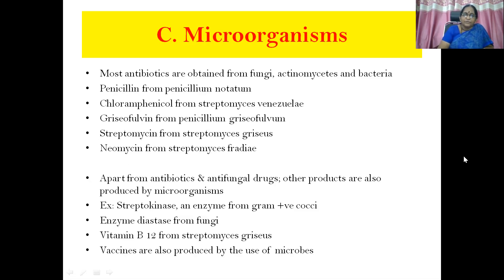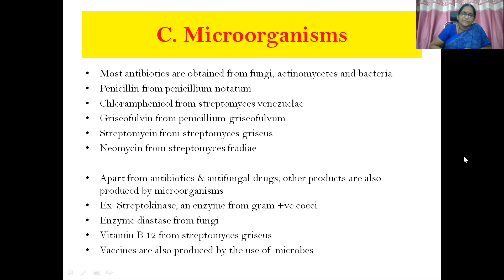Then another source is microorganisms. Most antibiotics are obtained from fungi, actinomycetes, and bacteria. Examples: penicillin from Penicillium notatum; chloramphenicol from Streptomyces venezuelae; griseofulvin from Penicillium griseofulvum; streptomycin from Streptomyces griseus; neomycin from Streptomyces fradiae. Apart from antibiotics and antifungal drugs, other products are also produced from microorganisms — for example, streptokinase, an enzyme from gram-positive cocci (not an antibiotic); diastase from fungi; vitamin B12 from Streptomyces griseus; and some vaccines are also produced by microorganisms.